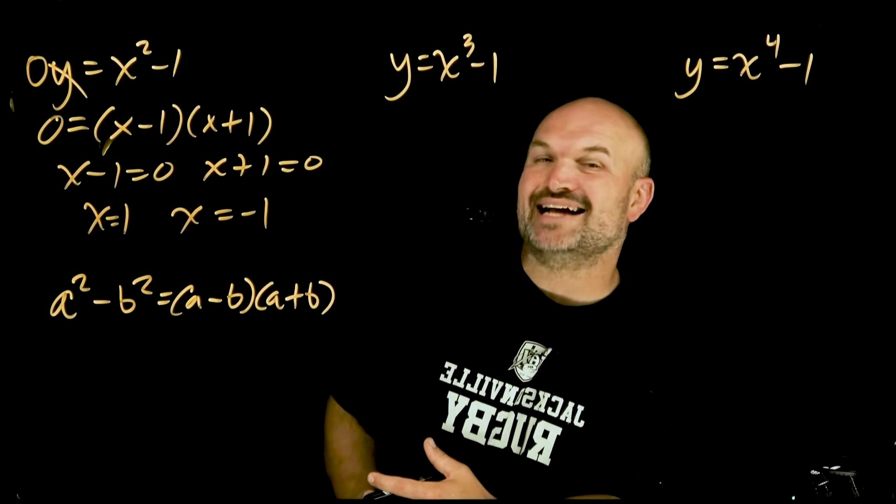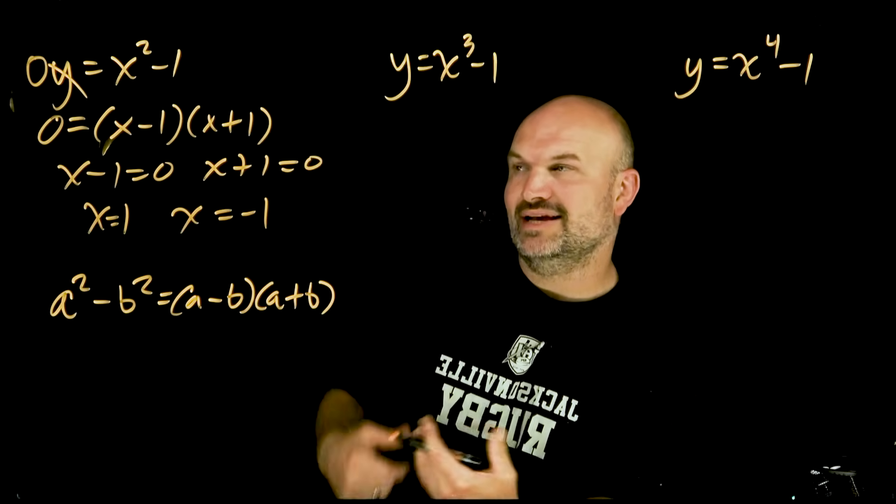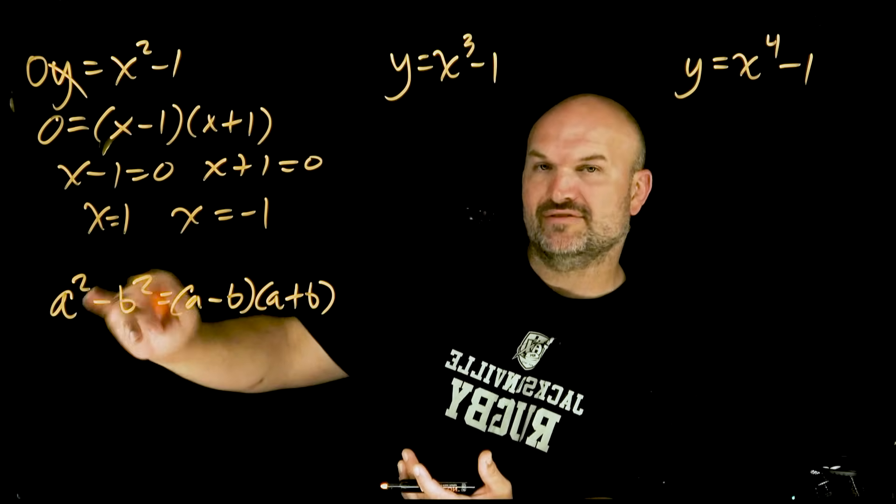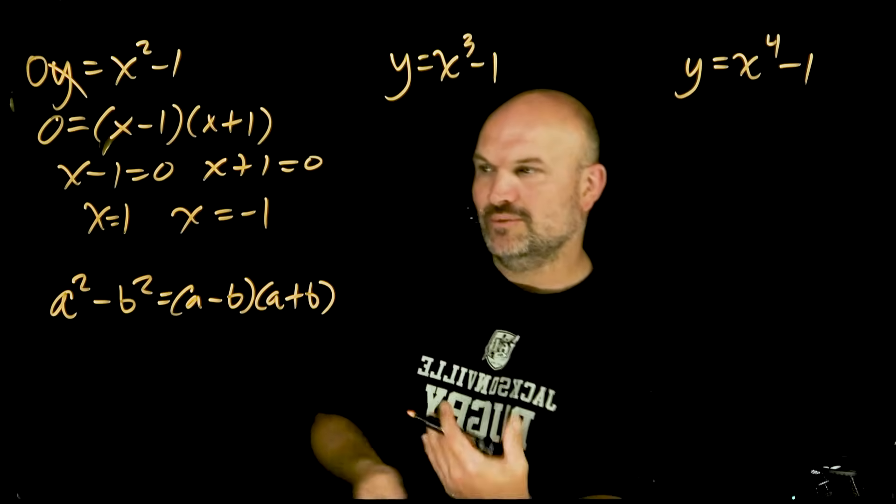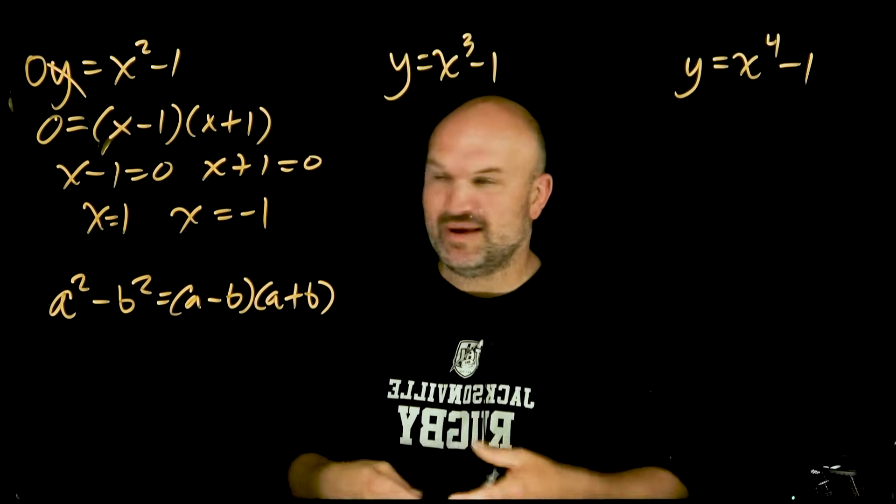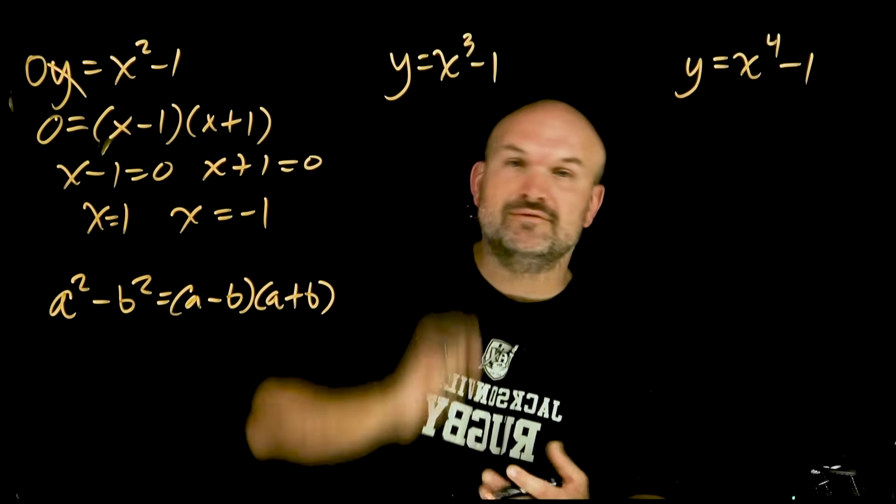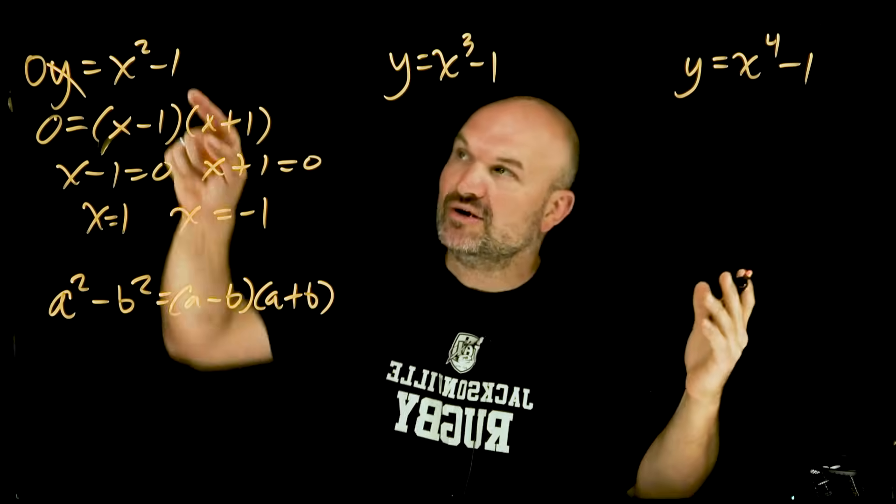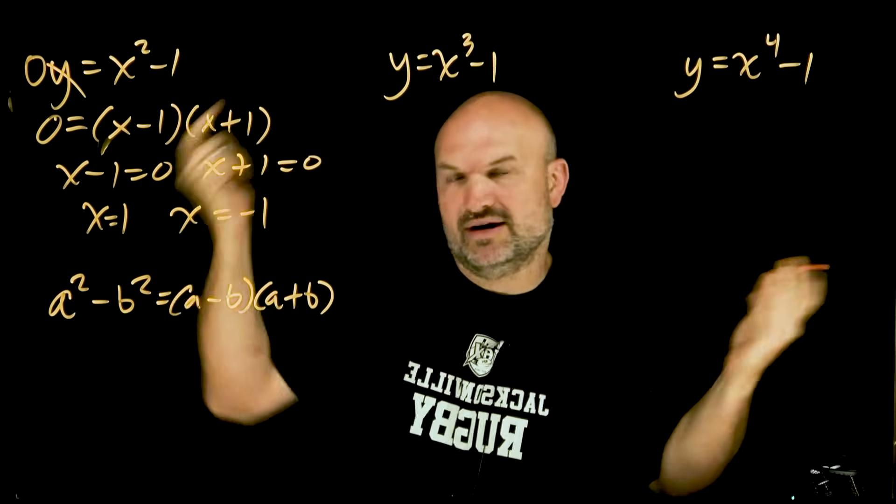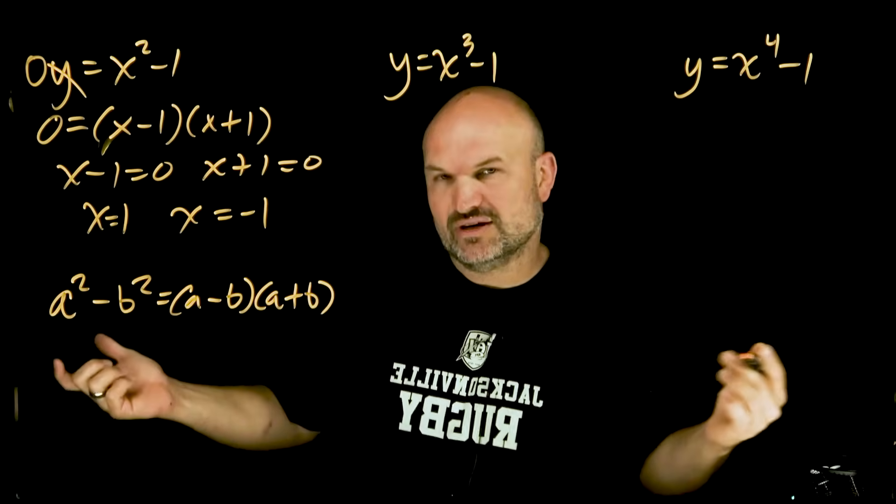Now this next example, I have y equals x cubed minus one. So it's similar to this form of a squared minus b squared, but obviously it's not squared. It's raised to the third power. So maybe you're familiar, maybe you're not, but we have a nice formula for when we have the difference in two cubes, because I can rewrite one as raised to the third power, just like I can rewrite one squared.